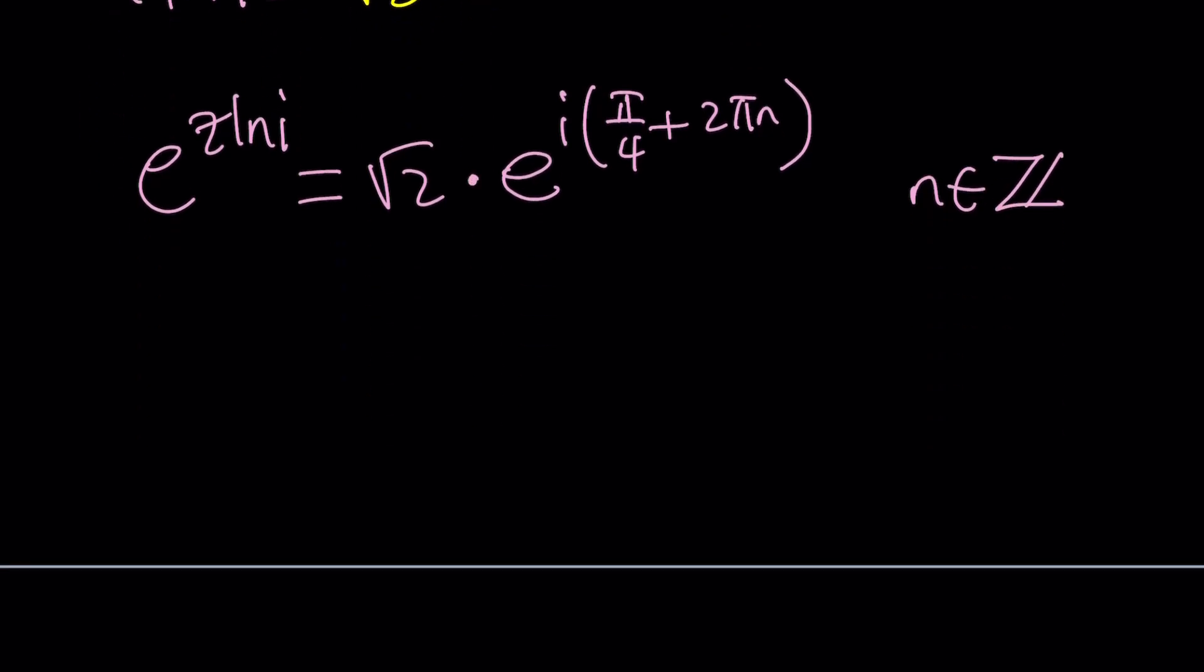Now let's go ahead and talk about what z ln i would be, or ln i. But before we get to that, obviously at this point, you want to natural log both sides, and that's going to give you z ln i equals ln square root of 2 plus i times pi over 4 plus 2 pi n. It's basically the logarithm of a complex number because z ln i is also a complex number, so on and so forth.